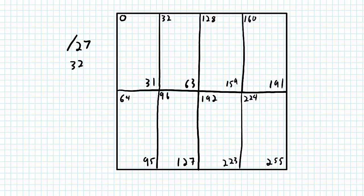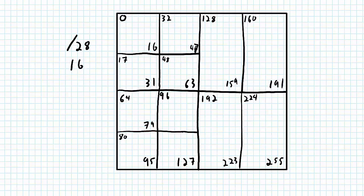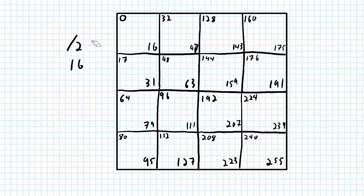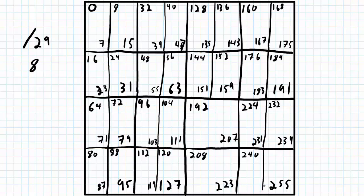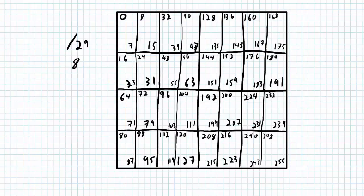Now let's split all these subnets in half again to give a bunch of slash 28 networks — specifically 16 of them, each with 16 IP addresses. Split them in half again and I get slash 29 networks, each with 8 addresses, for 32 total networks. The last possible split gives slash 30 networks, each with 4 network addresses, but since the first and last are not assignable to hosts, you can actually only have two hosts in each of these networks.